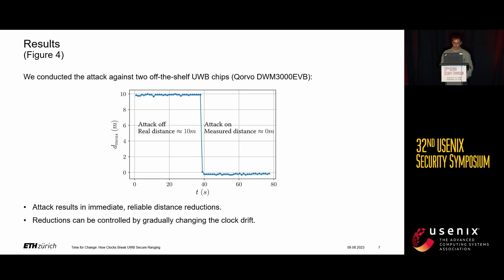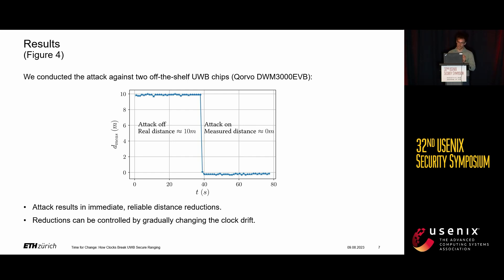Importantly, the attacker doesn't necessarily have to directly reduce the distance from 10 to zero — that could be spotted by a countermeasure. Since the attacker completely controls the stretch it introduces, it can do this in a smoother way to simulate a person gradually approaching the car, reducing the distance from 10 meters to zero meters.